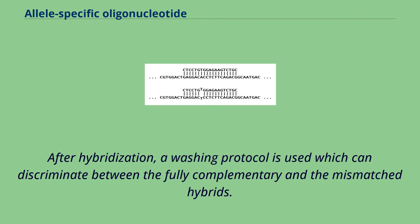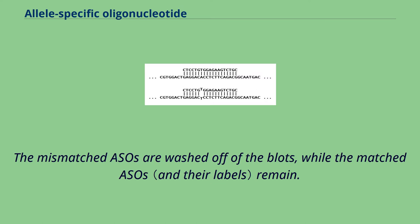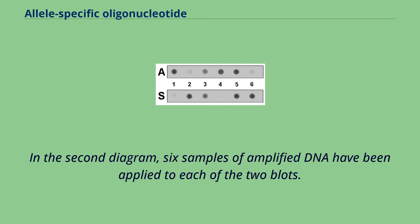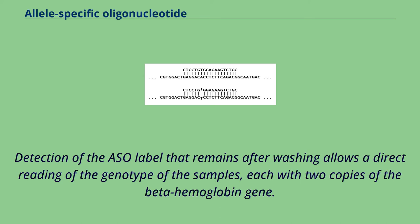After hybridization, a washing protocol is used which can discriminate between the fully complementary and the mismatched hybrids. The mismatched ASOs are washed off of the blots, while the matched ASOs remain. In the second diagram, six samples of amplified DNA have been applied to each of the two blots. Detection of the ASO label that remains after washing allows a direct reading of the genotype of the samples, each with two copies of the beta hemoglobin gene.